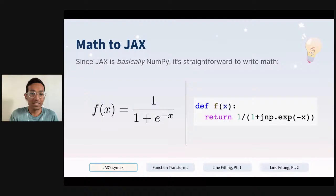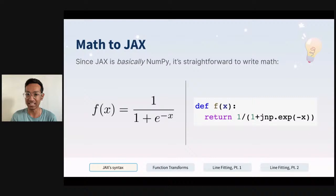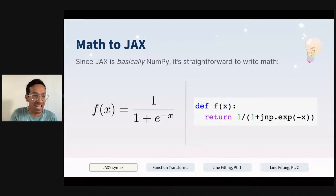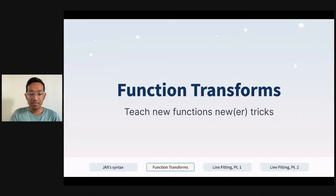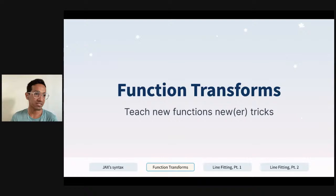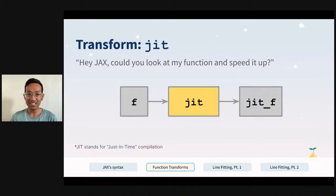JAX is NumPy, which means it's really straightforward to translate ideas you have as math into code. A function in math can be easily translated to a function in code. JAX builds on NumPy with things called function transforms that allow you to take math functions you've already written and transform them to get brand new features. The first one we'll look at is a transform called JIT — just-in-time compilation.